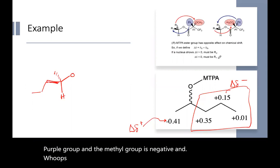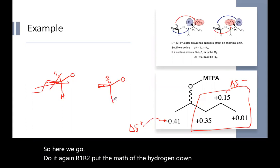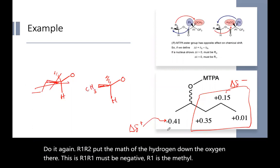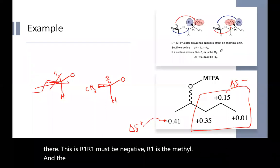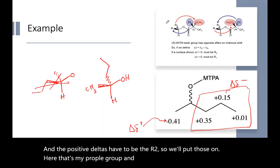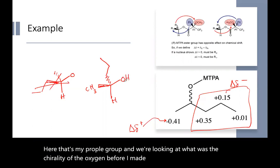I did it wrong. R1 is negative. So here we go. Do it again. R1, R2, put the hydrogen down, the oxygen there. This is R1. R1 must be negative. R1 is the methyl. And the positive deltas have to be the R2. So we'll put those on here. That's my propyl group. And we're looking at what was the chirality of the oxygen before I made the ester. So here, I just drew it as the alcohol.